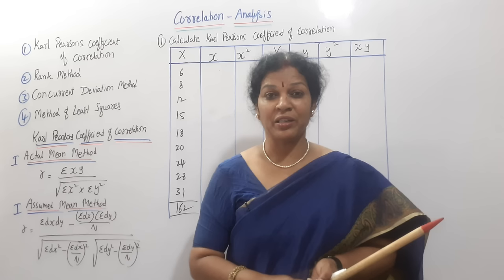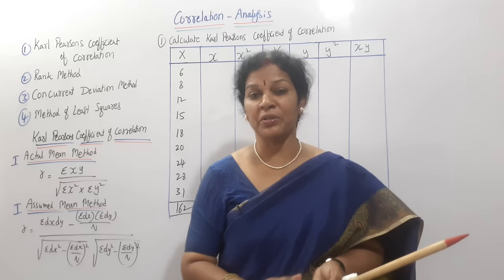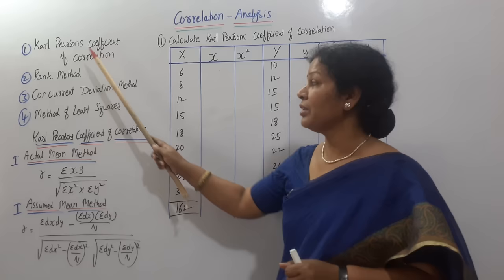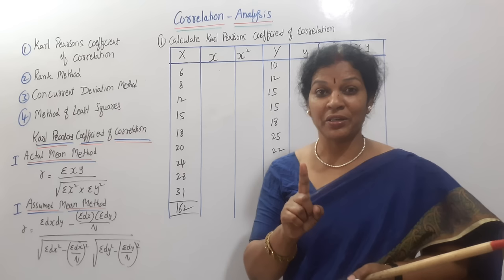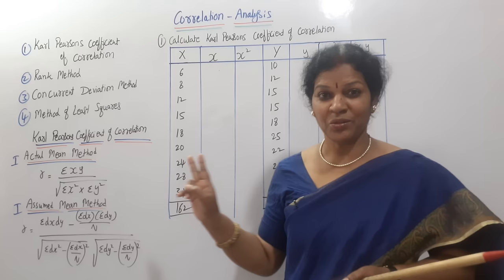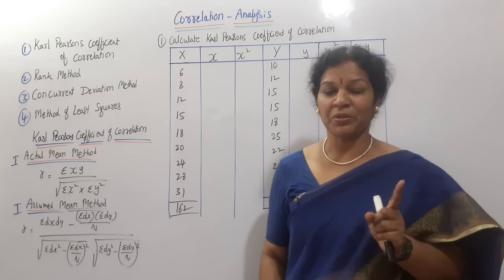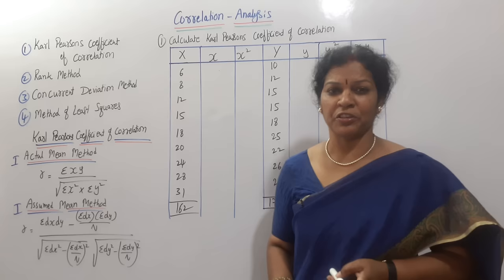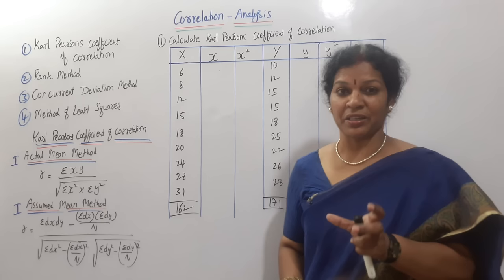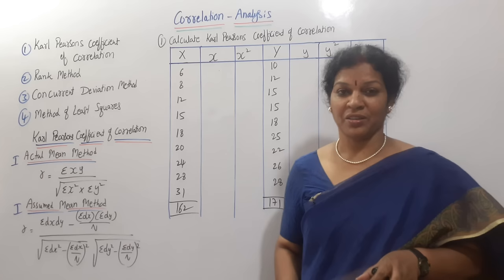In correlation analysis, we are going to discuss different topics. The first one is Carl Pearson's coefficient of correlation — we have seen Carl Pearson in standard deviation and in skewness, and now he is in correlation. The second is the rank method, where by giving ranks we can calculate correlation. The third is the concurrent deviation method, using plus or minus signs. The fourth is the method of least squares. So four methods we are going to discuss.